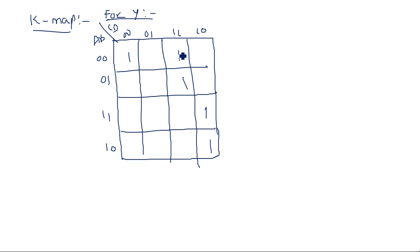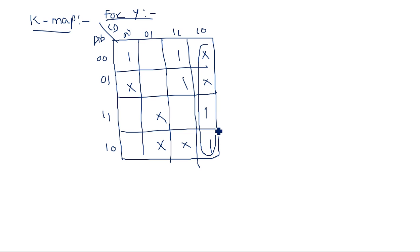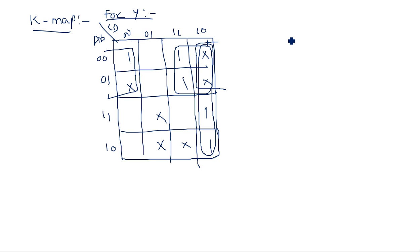Taking the don't cares for values 10 and above, we can form three groups of four in the K-map. These three groups each produce a term, and the simplified expression is: Y = Ā·D̄ + Ā·C + C·D̄. This is the output expression.